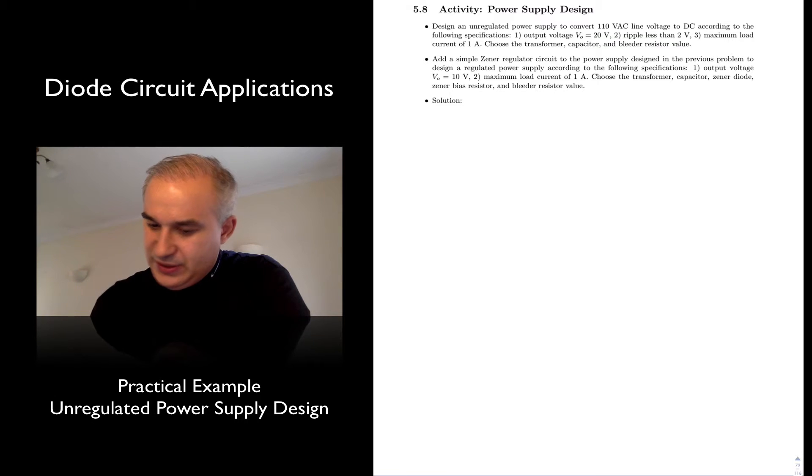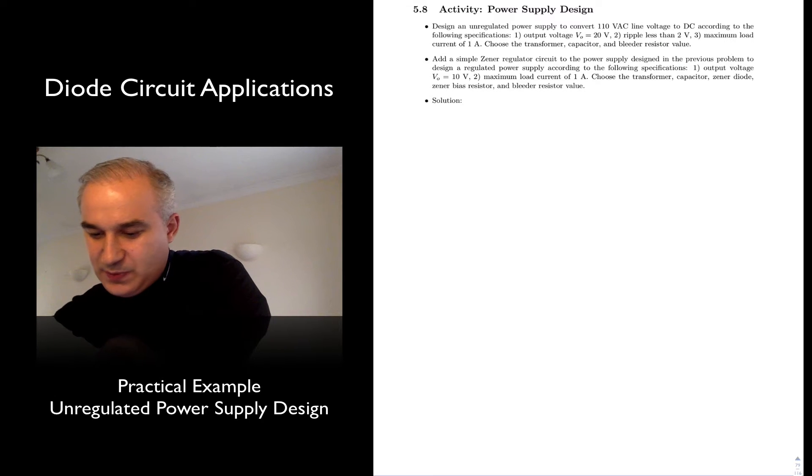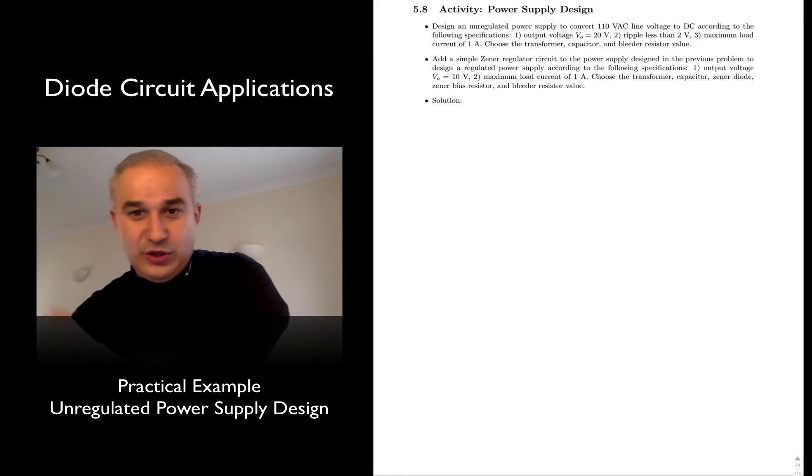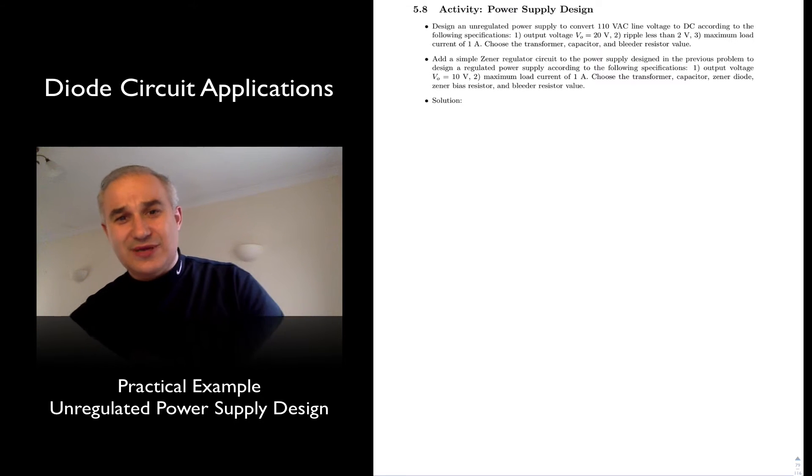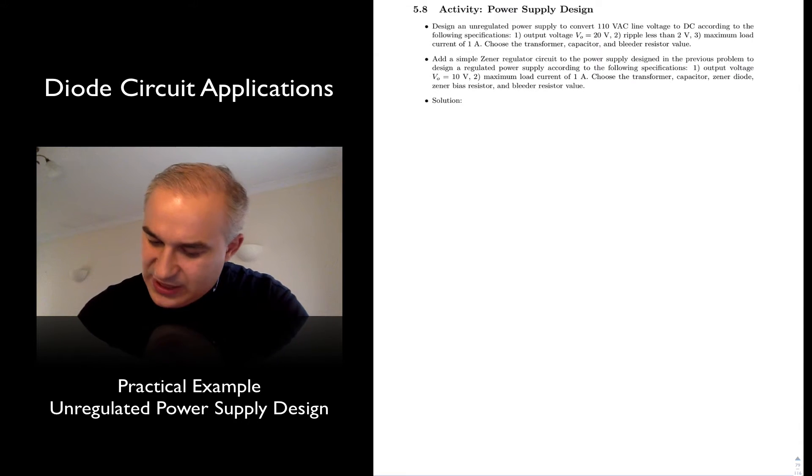In this activity, we are to design an unregulated power supply to convert 110 VAC voltage to DC according to the following specs. We want an output voltage of 20 volts with a ripple of less than 2 volts, a maximum load current of 1 amp, and we need to choose the transformer, the capacitor, the resistor value, etc. So, let's start with that.